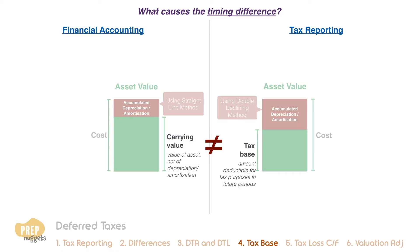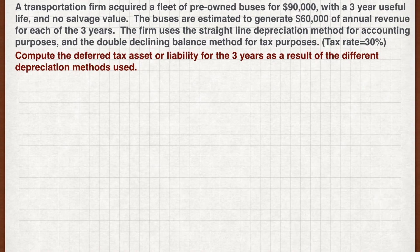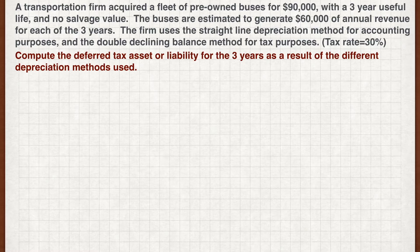Such differences will likely reverse in the future. Let's go through an example. A transportation firm acquired a fleet of pre-owned buses for $90,000 with a three-year useful life and no salvage value. The buses are estimated to generate $60,000 of annual revenue for each of the three years. The firm uses the straight-line depreciation method for accounting purposes and the double-declining balance method for tax purposes. Compute the deferred tax asset or liability for the three years as a result of the different depreciation methods used.